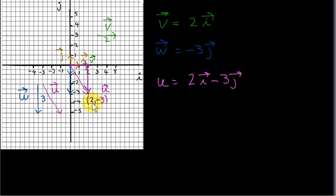We can also get it from the coordinates of the head of the vector. We're taking any vector in the plane and using the triangle law to write it as a sum of horizontal and vertical vectors. The horizontal vector is a multiple of unit vector i, which points in the positive x direction. The vertical vector is a multiple of unit vector j, which points in the positive y direction.